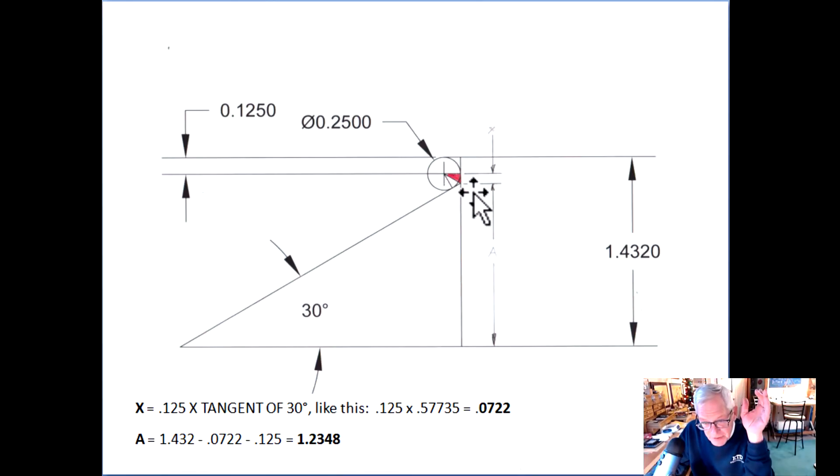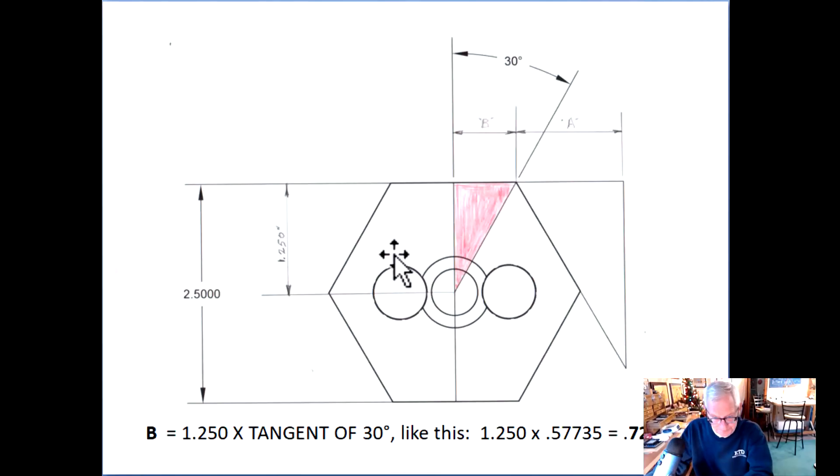Moving along, we have to solve this triangle now. We already know this one, we solved that one, A. Well we know this side of the triangle which is half of the hex, two point five hundred, half of that is one point two five, one inch two hundred fifty thousandths, inch and a quarter. We know the angle is 30 so we can solve for B.